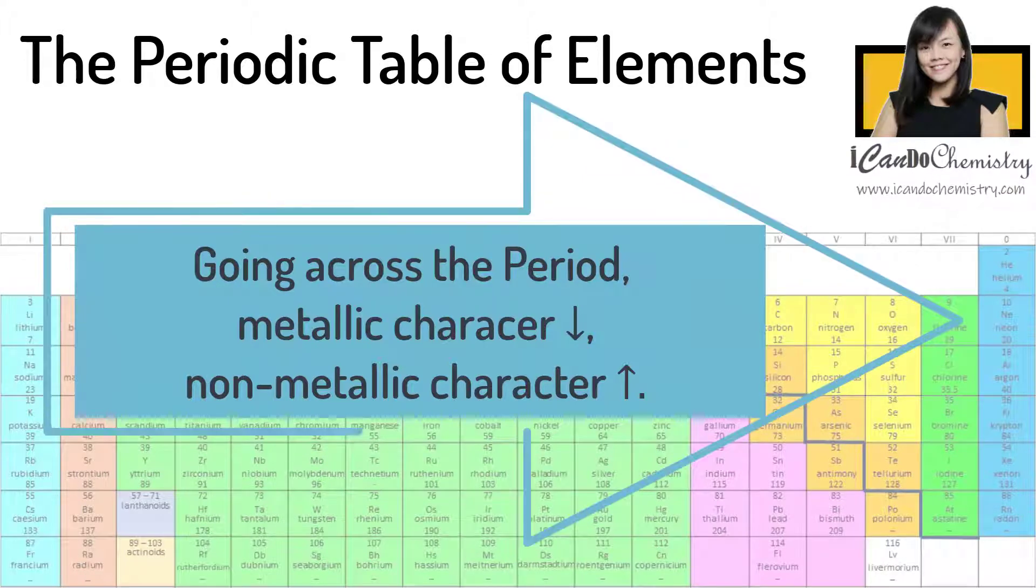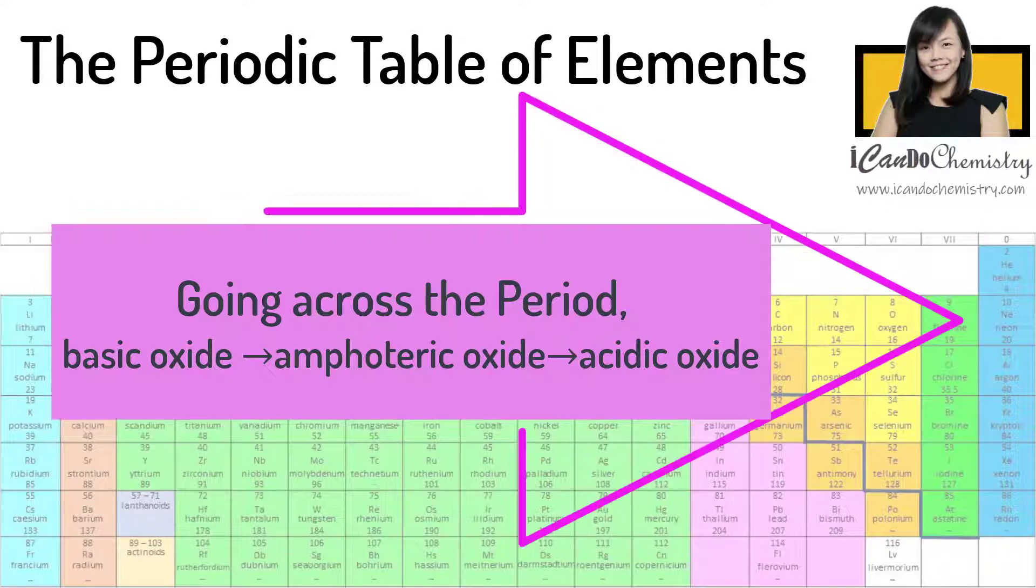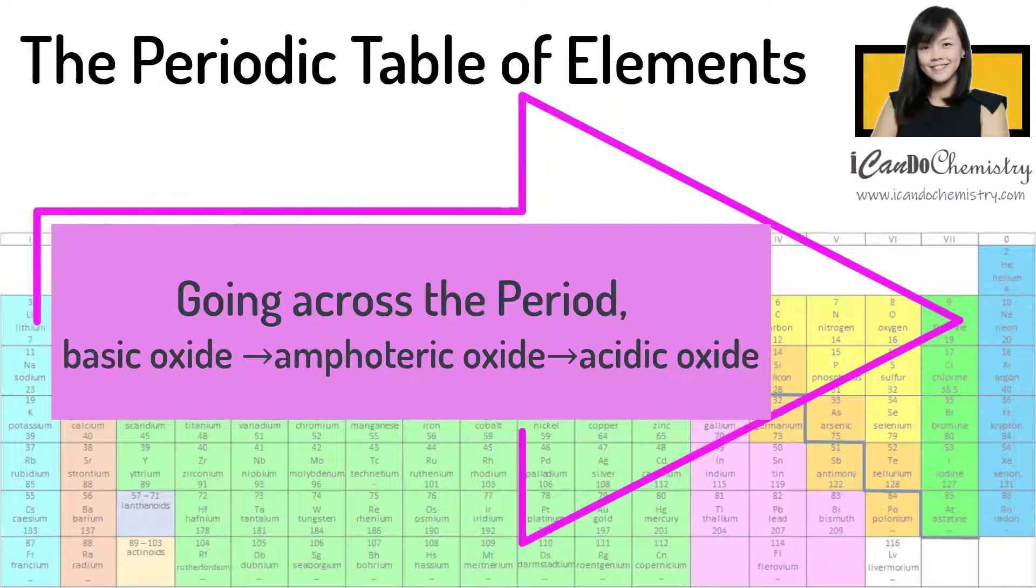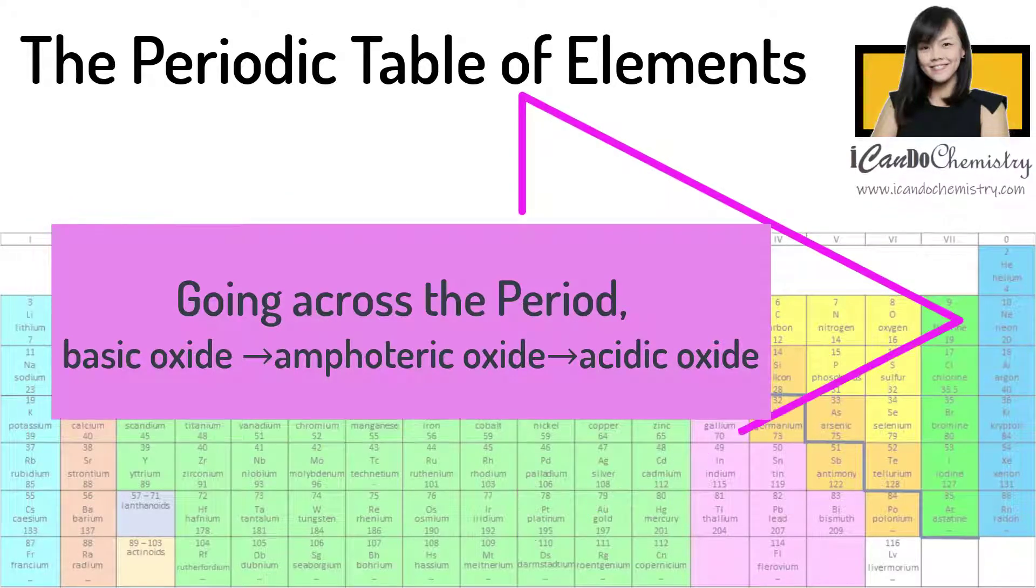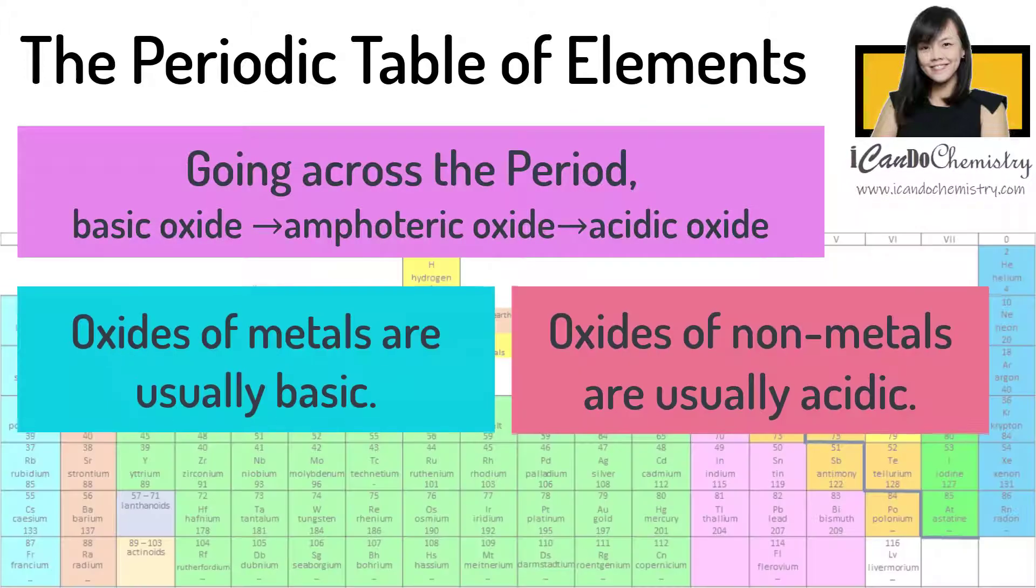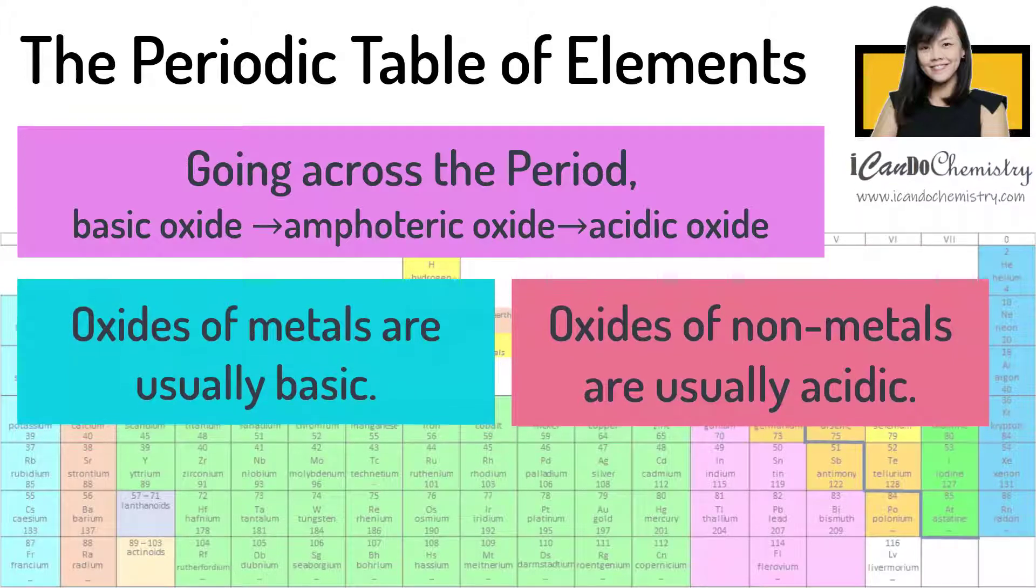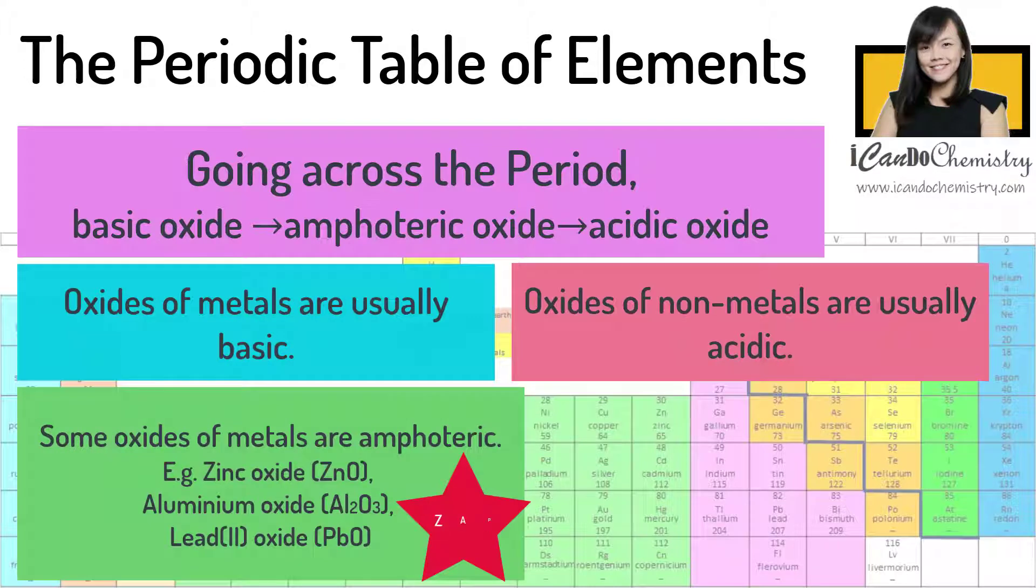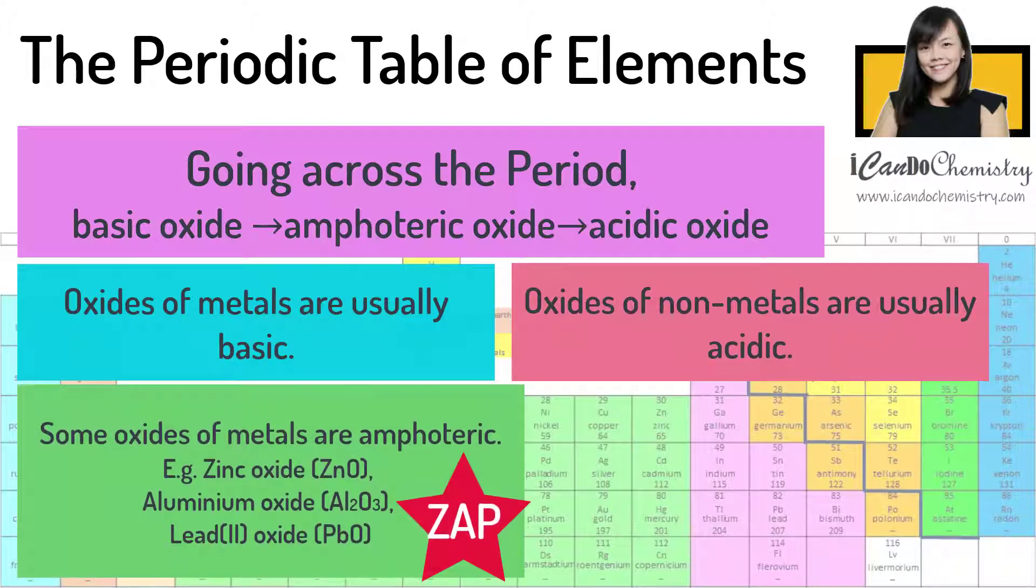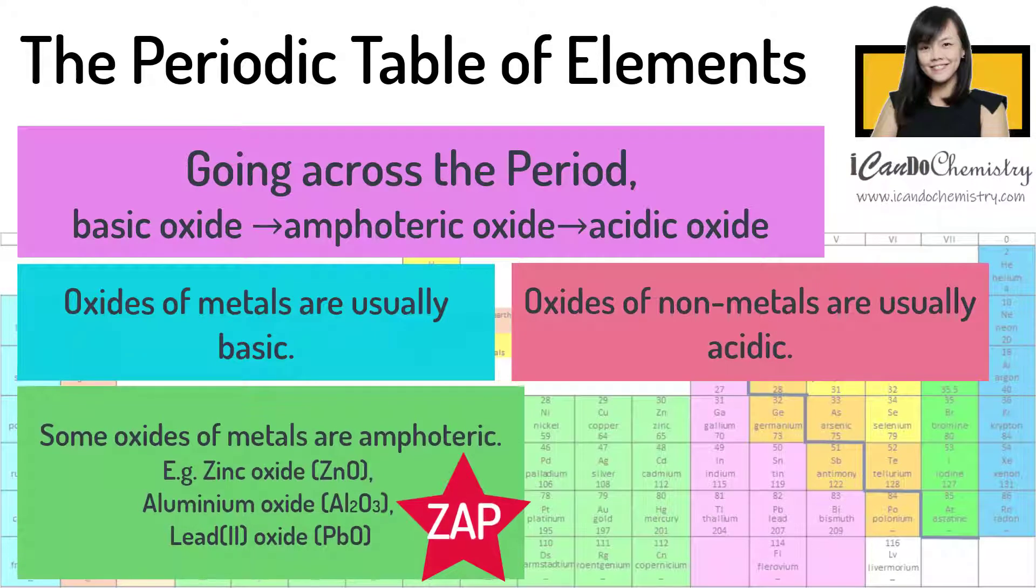while the non-metallic character increases. Now the chemical properties of the oxides of the elements changes from basic oxide to amphoteric oxide to acidic oxide. The oxides of metals are usually basic and the oxides of non-metals are usually acidic.